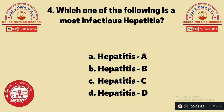Question 4: Which one of the following is the most infectious hepatitis? A. Hepatitis A, B. Hepatitis B, C. Hepatitis C, D. Hepatitis D. Hepatitis B and C are the most infectious types. However, hepatitis C causes the highest mortality rate among these four types.